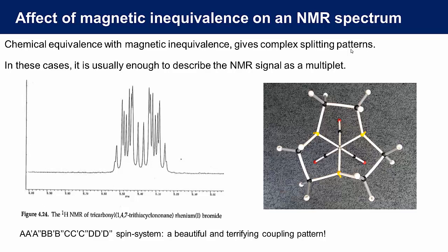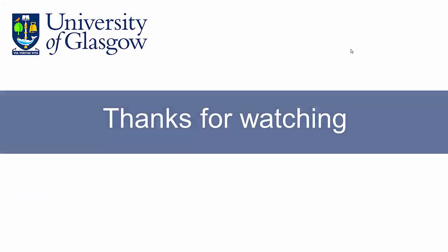Recognizing that there was chemical equivalence and magnetic inequivalence, I was able to identify it as an A'', B', B', B', C', C', D', D', D' spin system. And since NMR was not the topic of my PhD, I was quite relieved to be able to simply label it as multiplet.